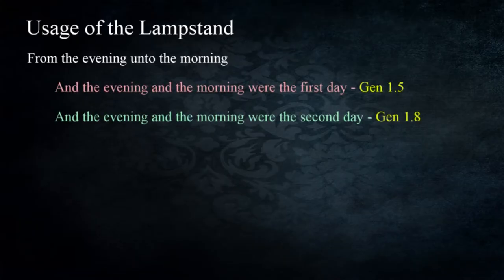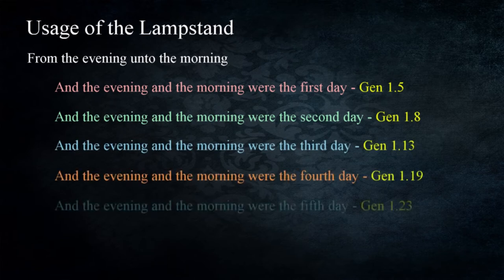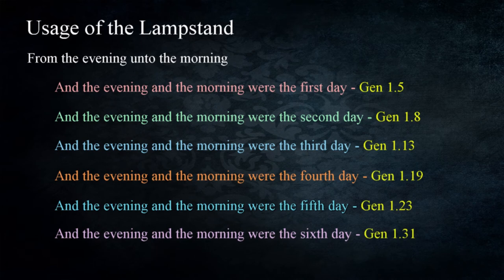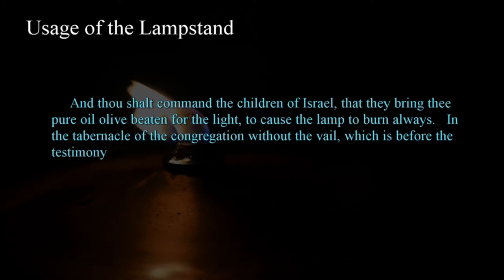First, the phrase "from the evening unto the morning" is similar to phrases found in Genesis, where each day of creation is described as the evening and the morning, indicating a full 24-hour period — so the phrase indicates daily regularity. The second clarifying statement is the command that the light is to burn always: "Thou shalt command the children of Israel that they bring pure oil olive beaten for the light, to cause the lamps to burn always in the tabernacle of the congregation without the veil, which is before the testimony." (Exodus 27:20)